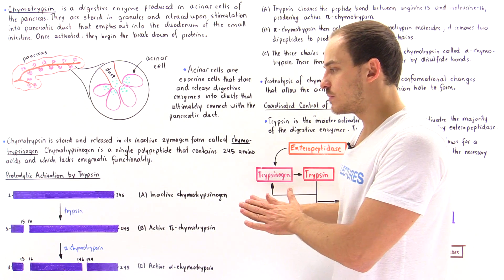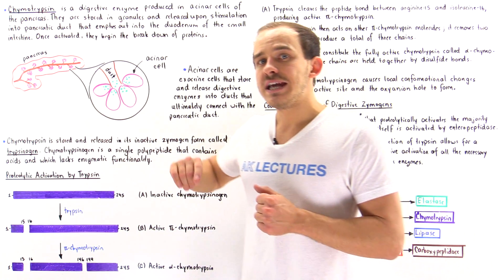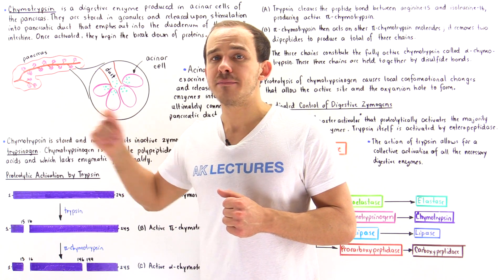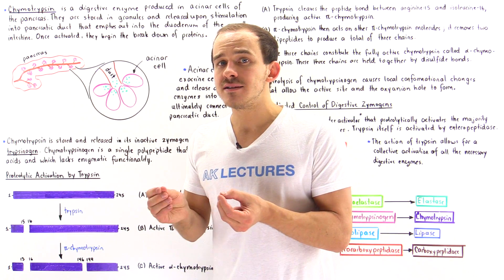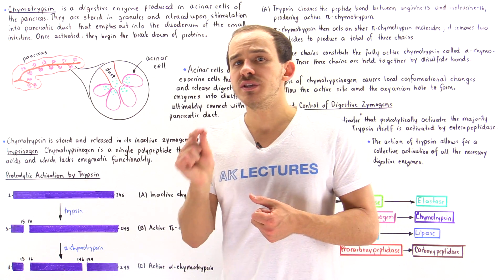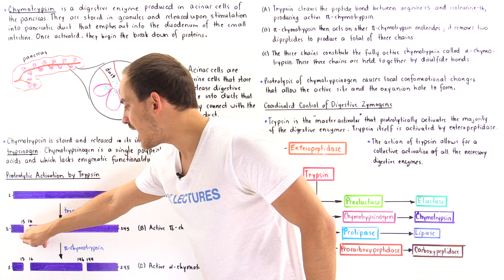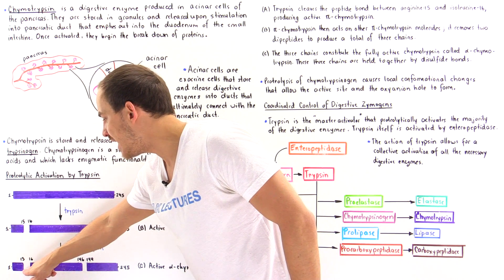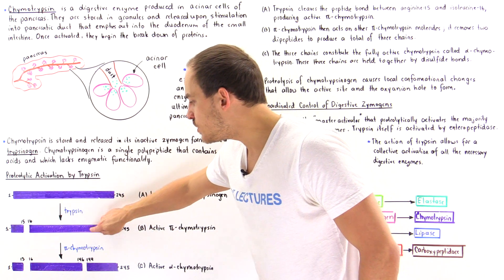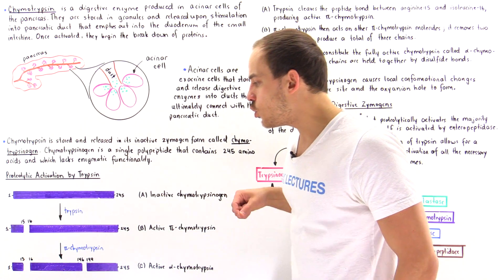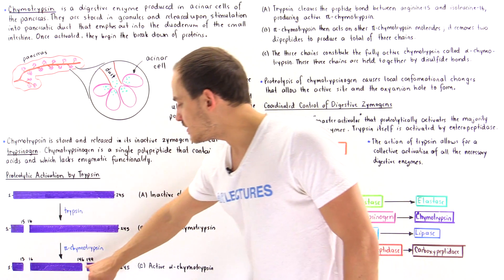Pi-chymotrypsin is not yet the fully functional enzyme. What pi-chymotrypsin does is react with other pi-chymotrypsin molecules and cleave them at several sites, ultimately removing two dipeptides from the molecule. This is why we go from 15 to 13 in one region, and why two amino acids are missing in another section.